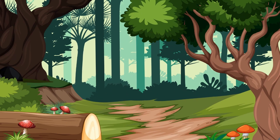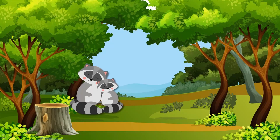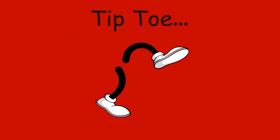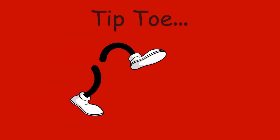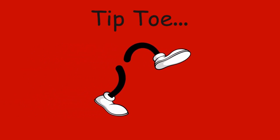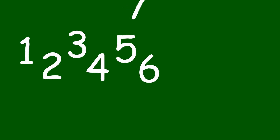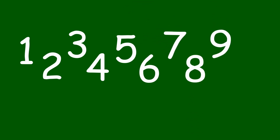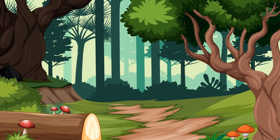We're going on a nature walk, you and me. We're going on a nature walk. What animals will we see? Oh, look. There's raccoons. Shh. Tiptoe quietly. Let's not wake them up. Tiptoe. Let's count. One, two, three, four, five, six, seven, eight, nine, ten.